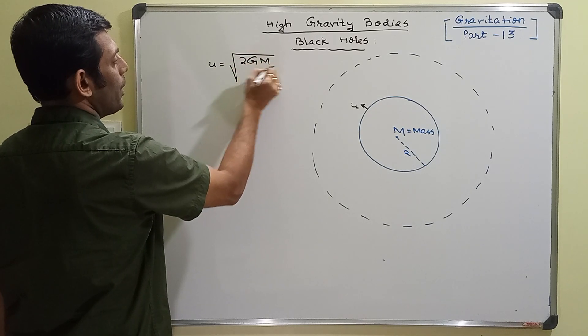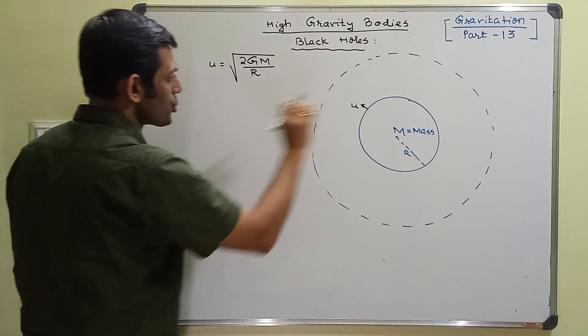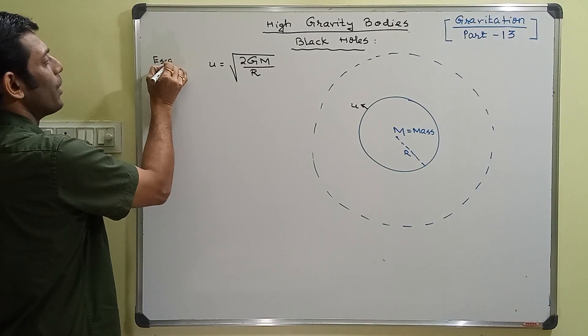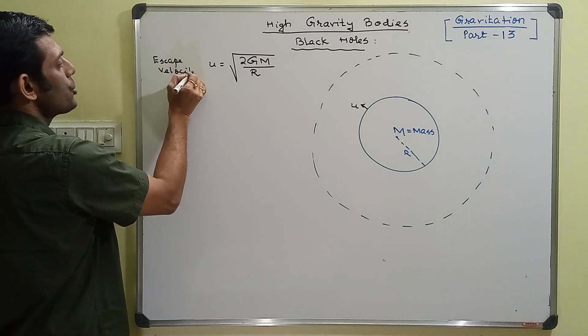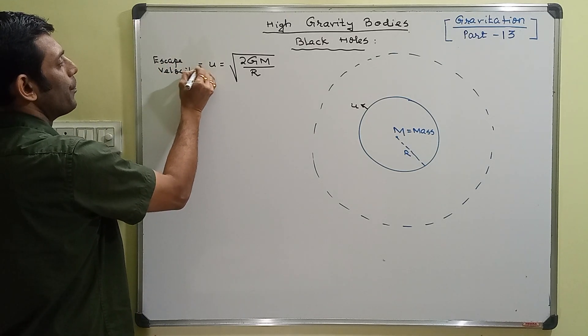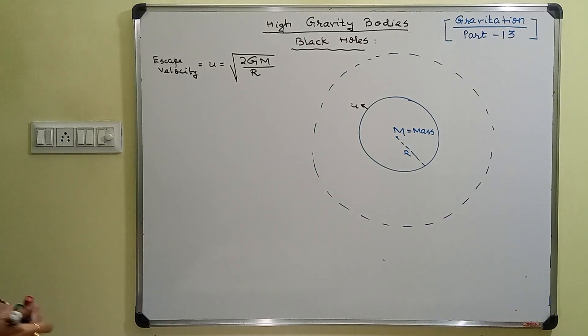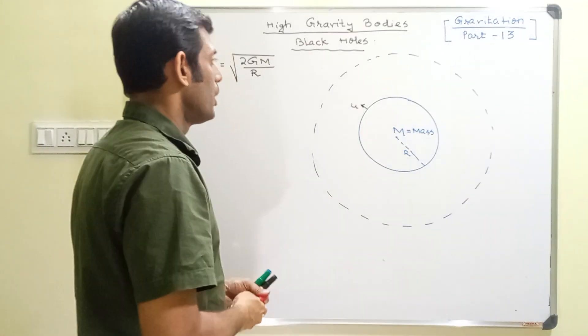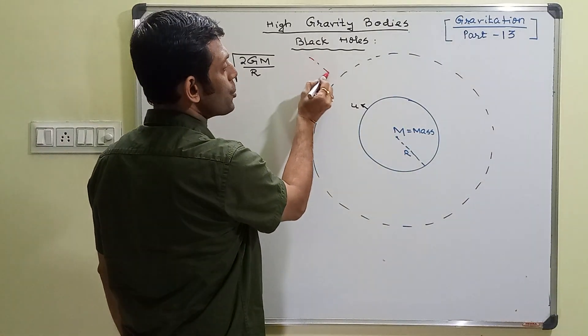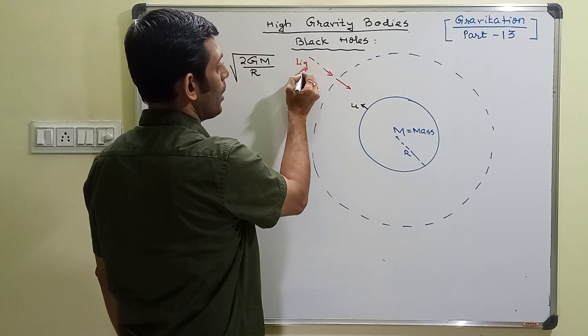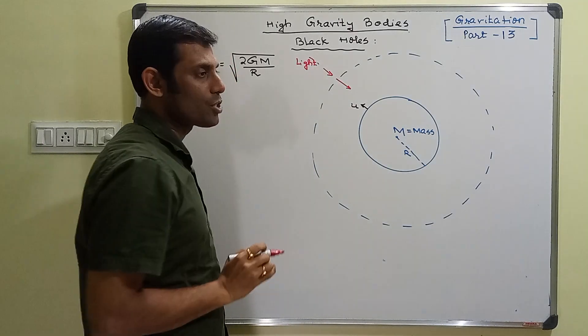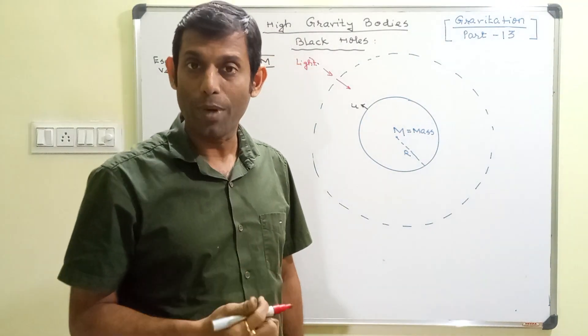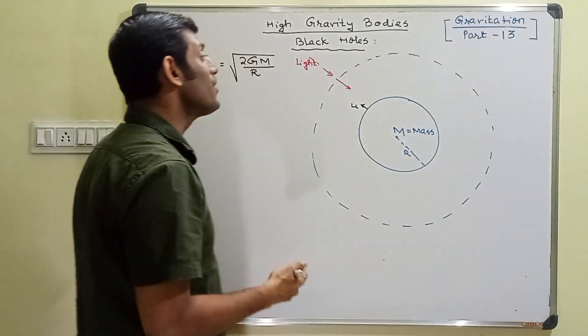2GM by capital R, mass of the gravitating body, radius of the gravitating body, as the escape velocity from the surface of a gravitating body. Now if light gets in, if light particles move in, light whose particles are photons with zero rest mass, whose rest mass is close to zero but have a speed of c.